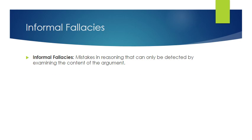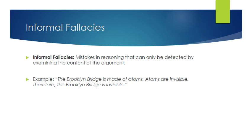Informal fallacies are mistakes in reasoning that usually occur in inductive arguments, and you can only know them by looking at the content of the argument. Here's an example: the Brooklyn Bridge is made of atoms; atoms are invisible; therefore the Brooklyn Bridge is invisible. We know the Brooklyn Bridge is obviously very visible, and atoms are invisible — to see the fallacy you have to know something about the content, but once you do, you can see the argument is not true.